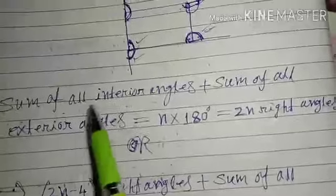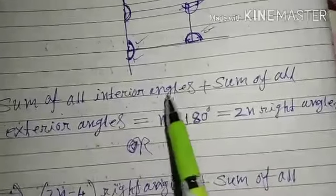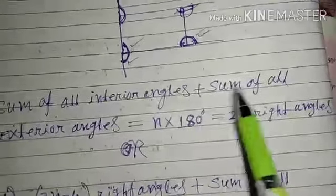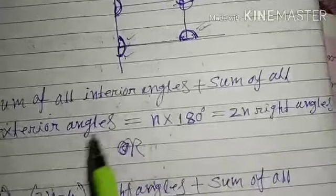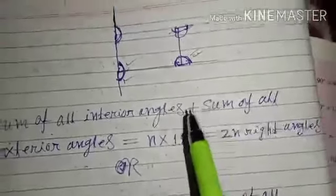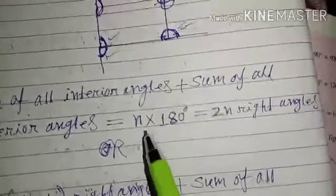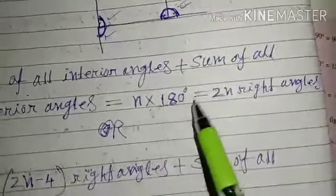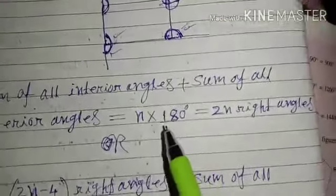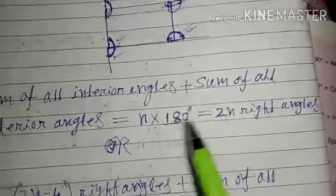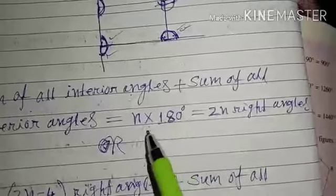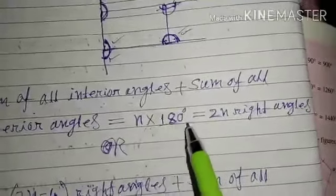Sum of all interior angles plus sum of all exterior angles equals n into 180, where n means number of sides.